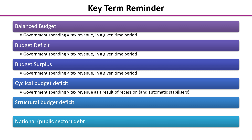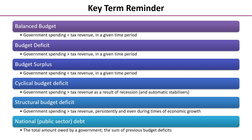The structural budget deficit is probably more serious because that's where government spending is greater than tax revenue persistently, even during times of economic growth. Normally in an upturn when GDP is growing, we would expect a budget surplus as tax revenues grow. And then the final term: national or public sector debt. This is the total amount owed by government — the cumulative total, the sum of previous budget deficits, not just the figure for one year.